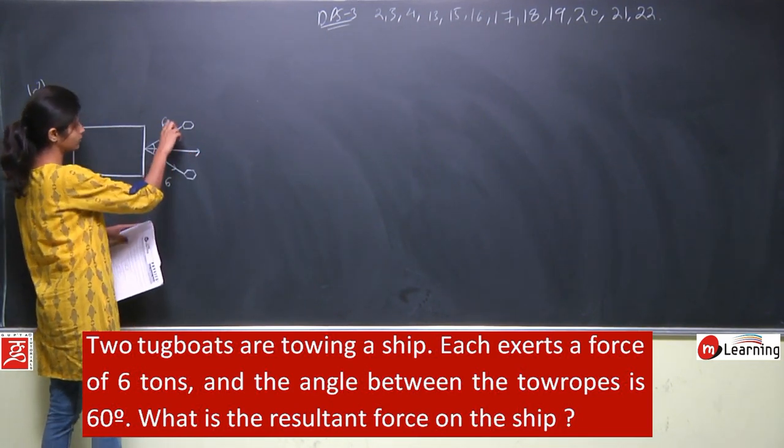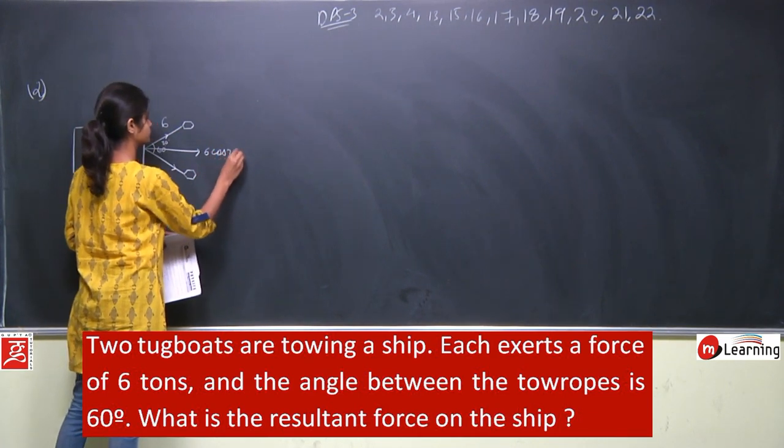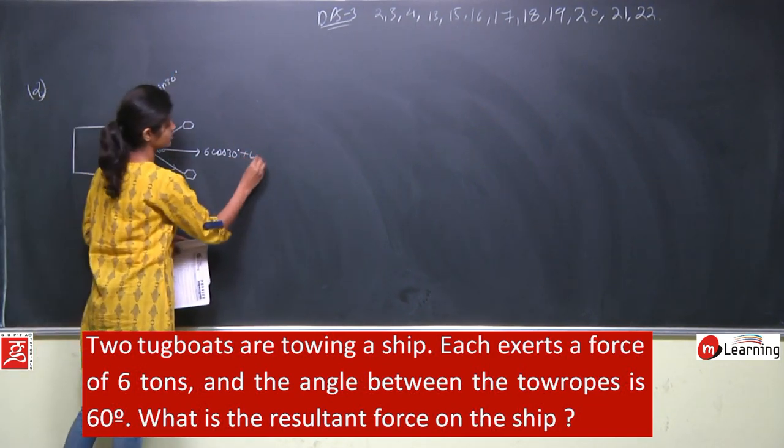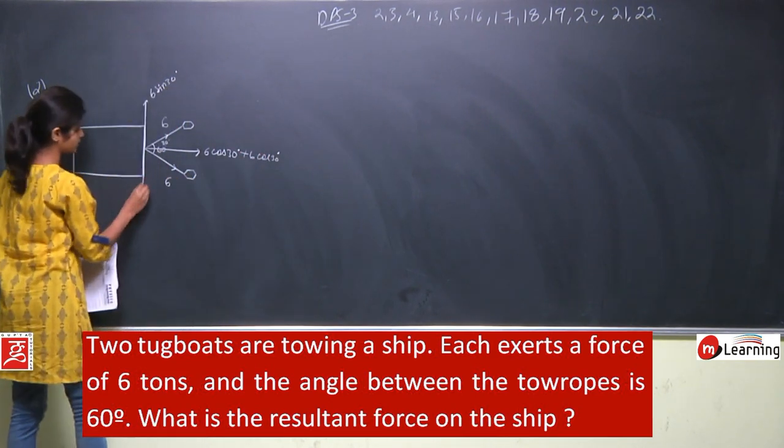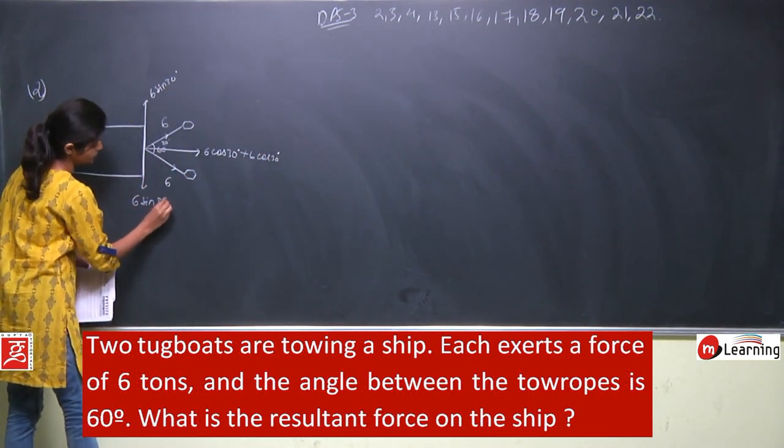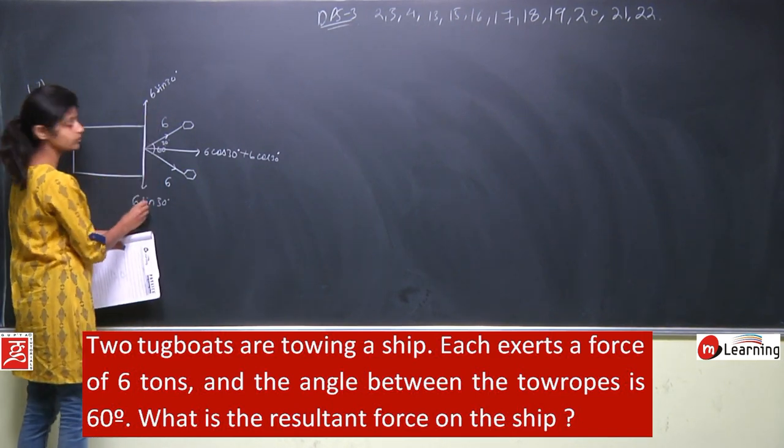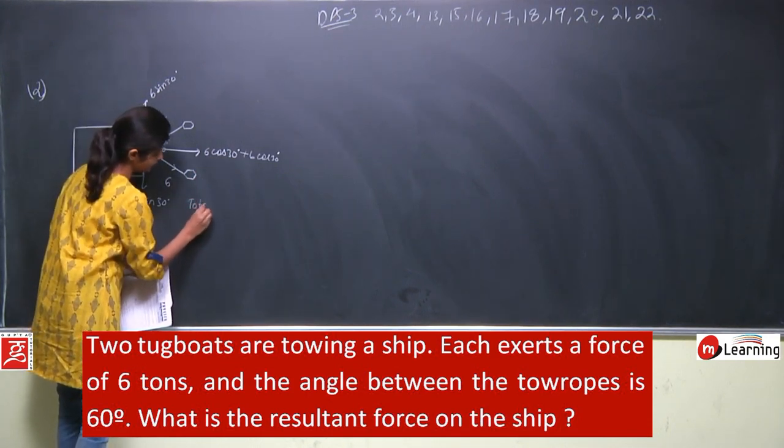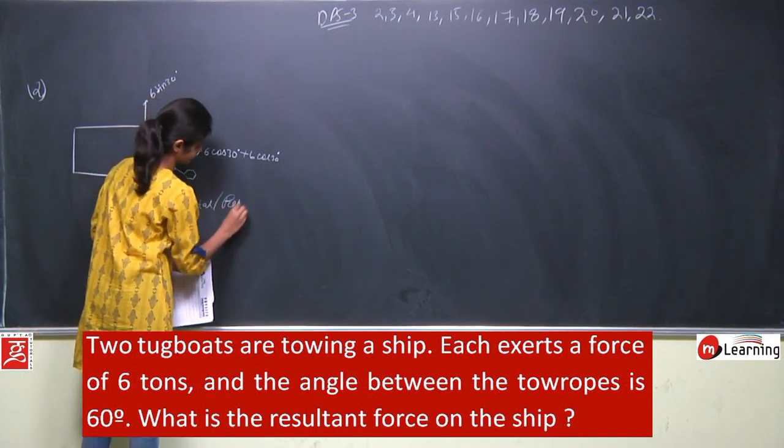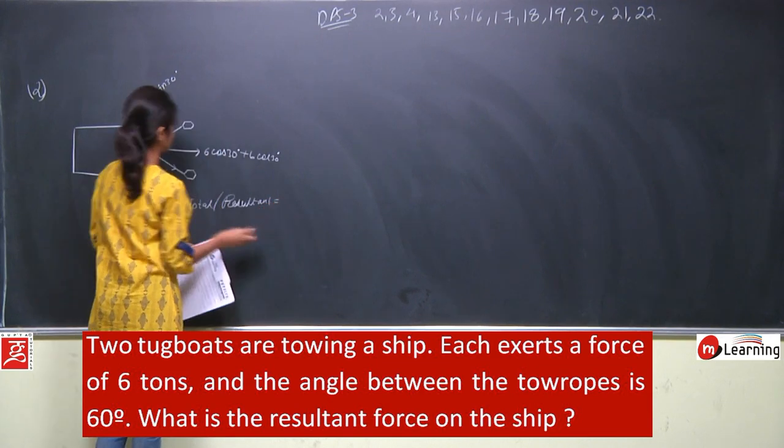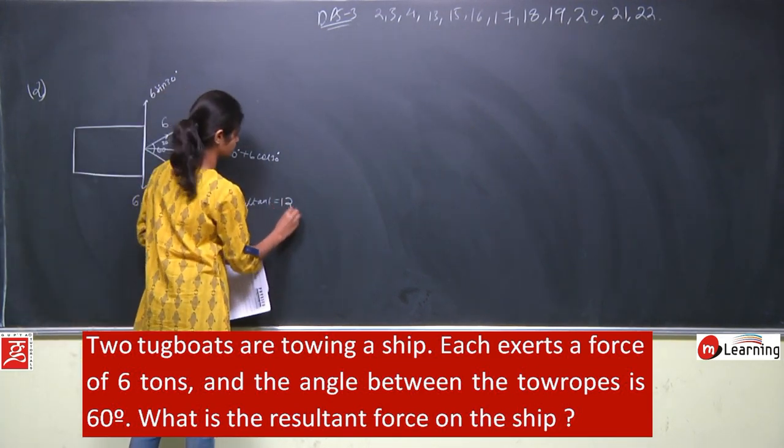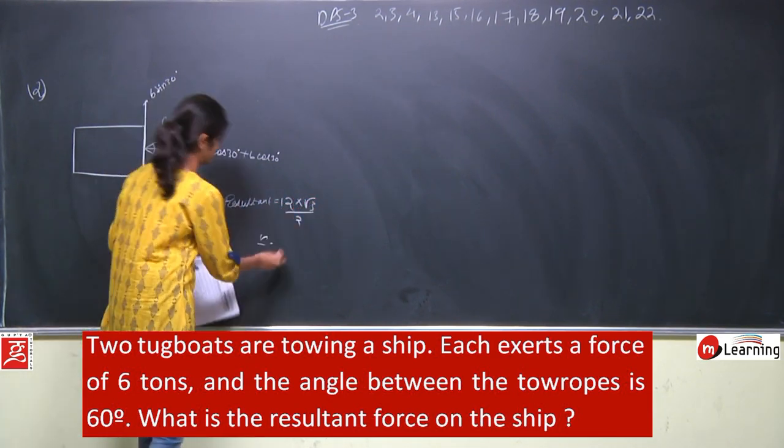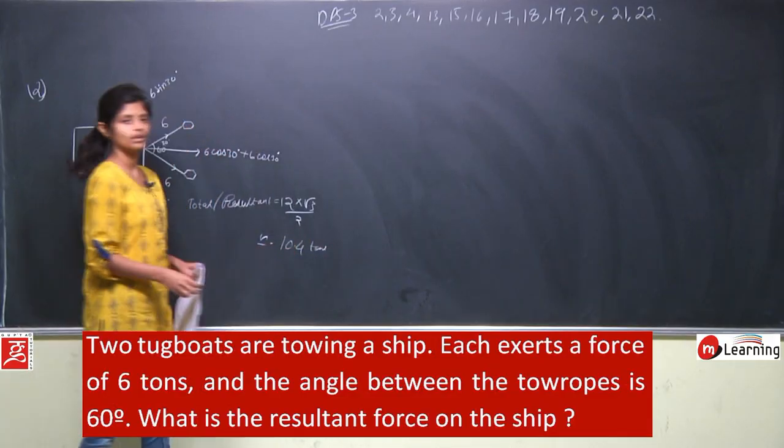Each boat applies 6 tons of force and the angle between them is 60 degrees. We need to find the resultant. The components will be: this angle will be 30 degrees, so 6 cos 30 degrees and upward 6 sin 30 degrees. Again, 6 cos 30 degrees and downward 6 sin 30 degrees. From the diagram, the vertical components cancel out and horizontal components add up. So resultant will be 2 into 6 that is 12 cos 30 degrees equals 12 times root 3 by 2, approximately 10.4 tons.